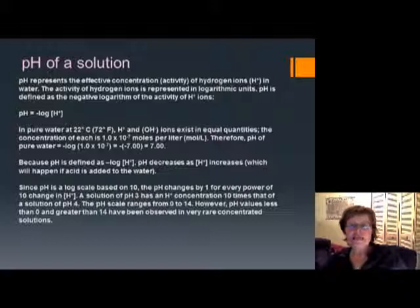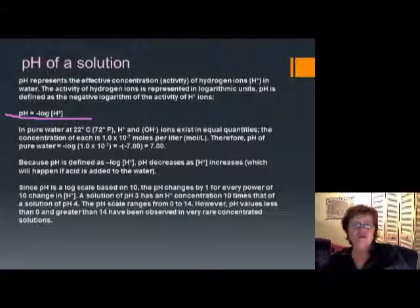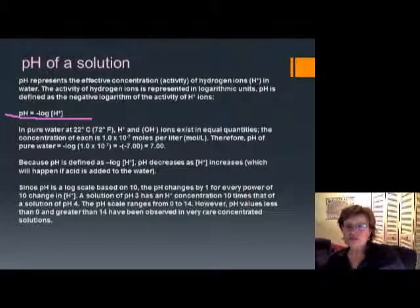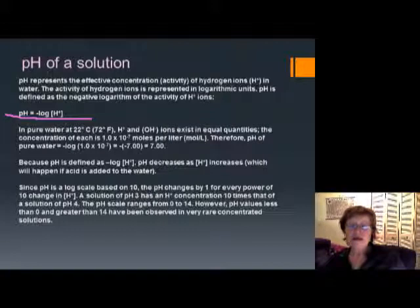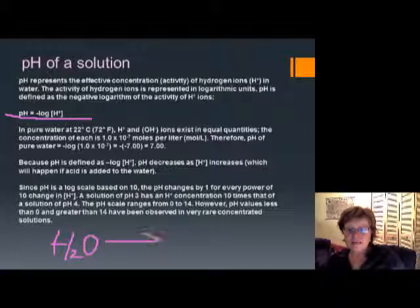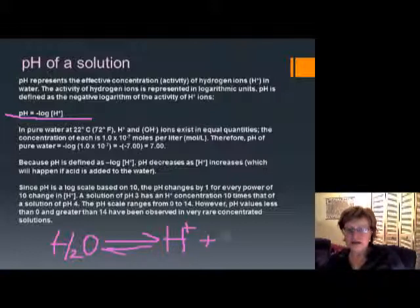pH is defined as the negative logarithm of the hydrogen ion concentration. When you have pure water — really pure water like distilled water — usually there are some water molecules that dissociate. H2O will dissociate, which means break up, into hydrogen ion and hydronium ion (OH⁻). However, not very many molecules will dissociate.